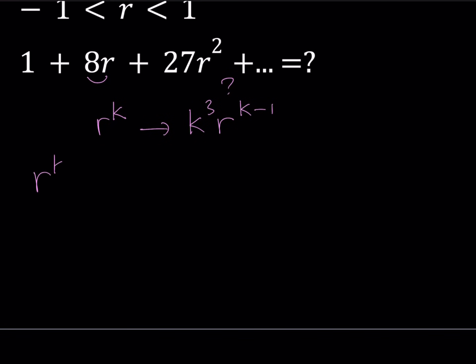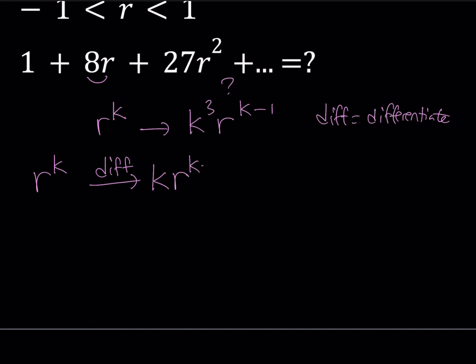First, I'm going to take r to the power k and differentiate it — I'll denote that as DIFF. Differentiating r to the power k with respect to r gives k times r to the power k minus 1. Then I'm going to multiply by r, and that gives me k·r to the power k. The purpose of multiplying by r after differentiation is to get perfect powers of k — we don't want k times k minus 1, which would give something like a factorial. That's why we multiply by r after differentiating.